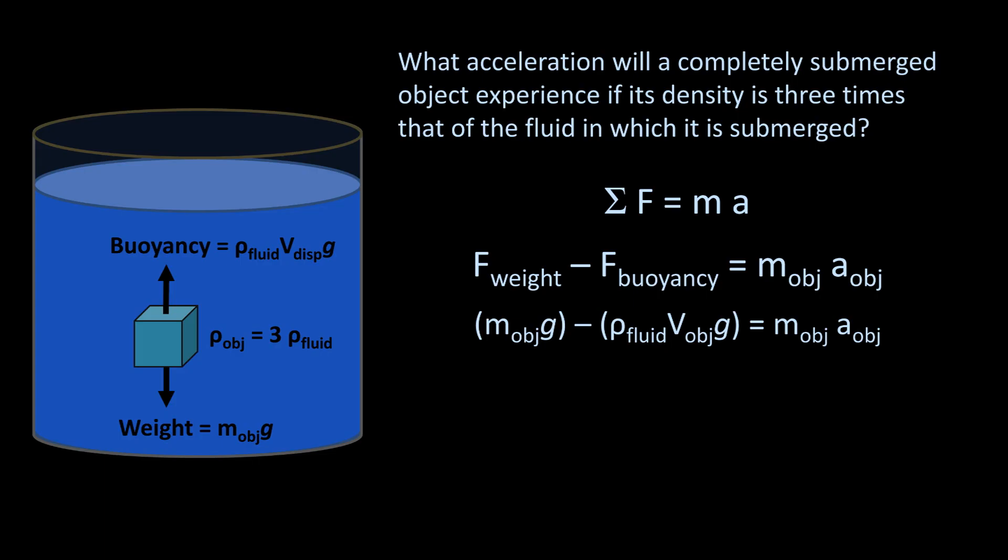We know from the last lesson on density that the density of an object is equal to the mass divided by its volume. So therefore, the mass of an object is equal to the density times volume. And remember that the density of this object is three times the density of the fluid. So for each mass of the object, we can substitute three times density of fluid times volume of object, which results in this.